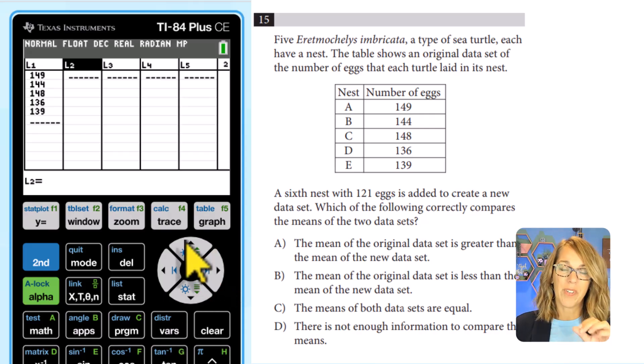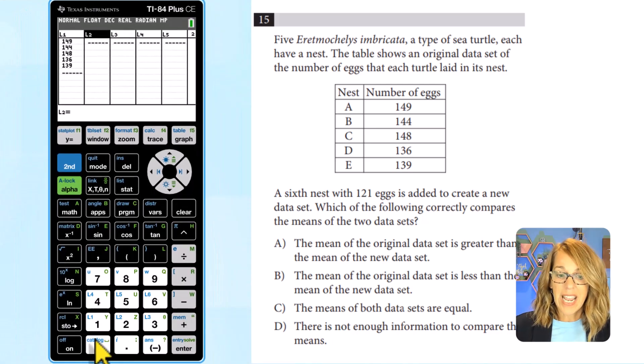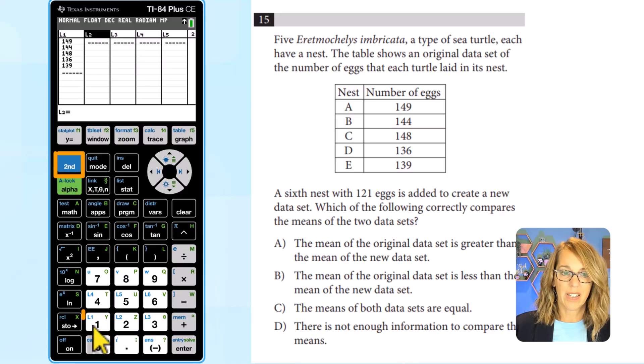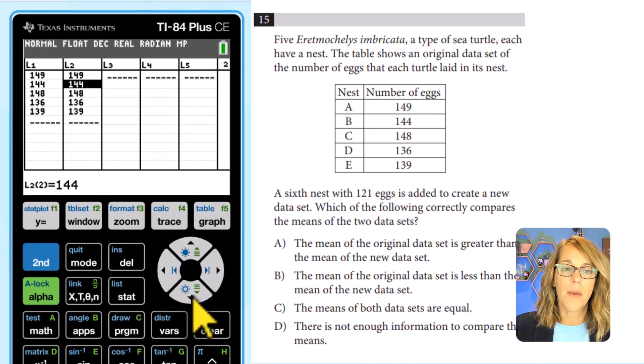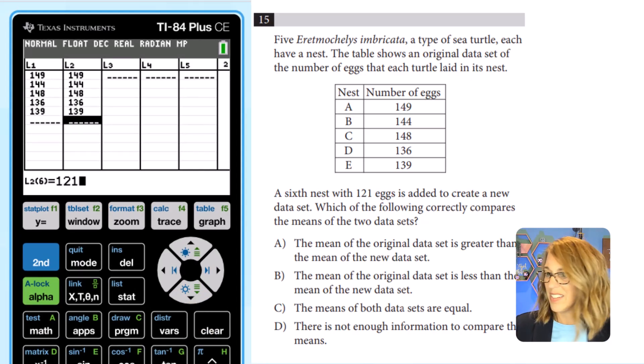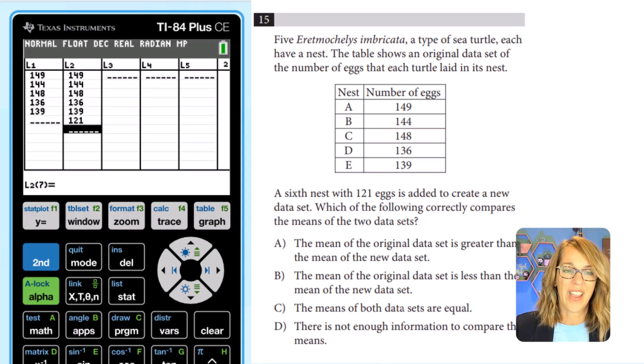So I've got my original data set, but I also want this data set with 121 added. Here's how we're going to do that. We're going to go up to the L2 name and we're going to assign L2 to be L1. I'm essentially making a copy. All of those list names live in blue on our numbers. So I want it to equal L1. So I'm going to go second L1 and then enter. So it's copied all of my values over, which is amazing. And I want to add that last data value, that last number of turtle eggs of 121. Okay, enter.